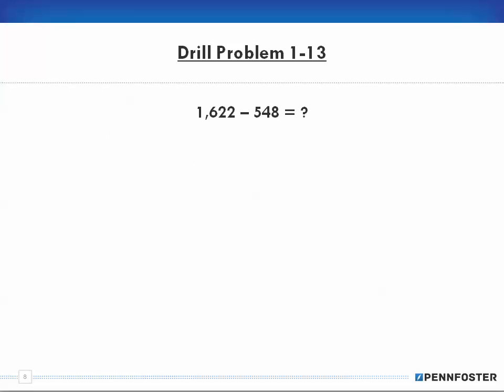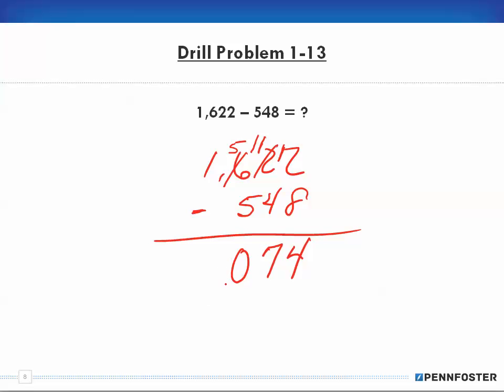Drill problem 1-13. 1,622 minus 548. Again, make sure everything is straight up and down, ones over ones, tens over tens, hundreds over hundreds. 8 from 2, we can't take 8 from 2, so we have to borrow. We're going to borrow 1, that gives us 12 over here. So 8 from 12 is 4. Now, 4 from 1, we can't take 4 from 1, so we have to borrow from the 100 spot. That makes 5, and that now makes that 11 in our tens. So 4 from 11 is 7. Then 5 from the 5 is 0, and nothing from 1 is 1. The answer is 1,074.